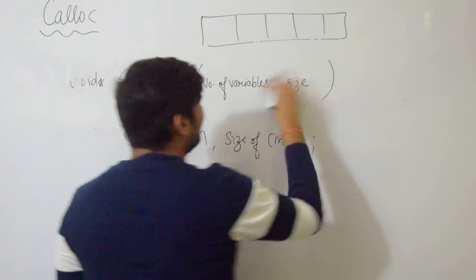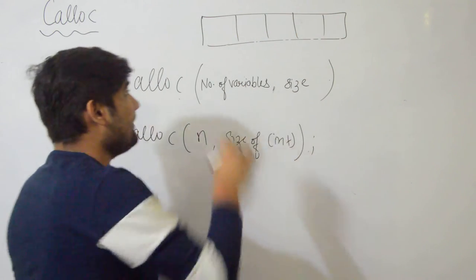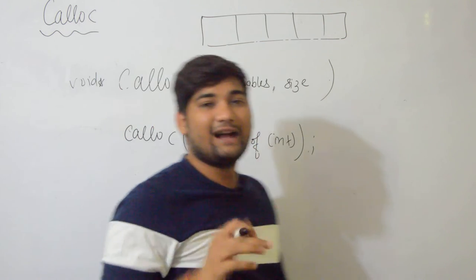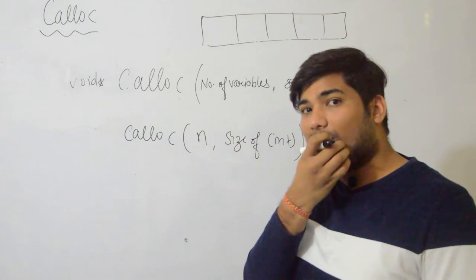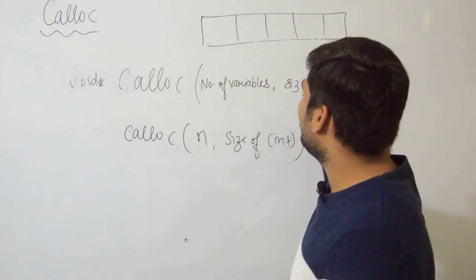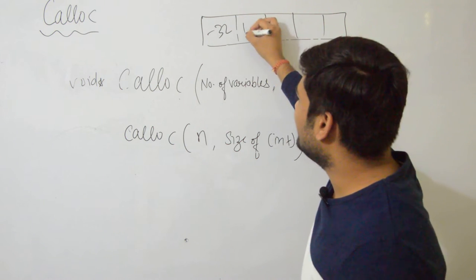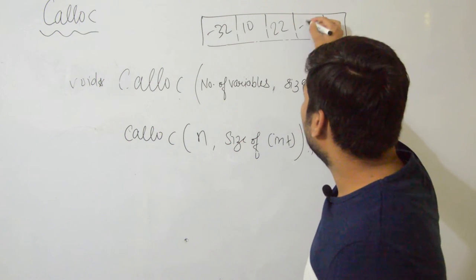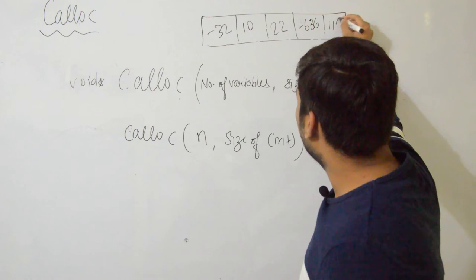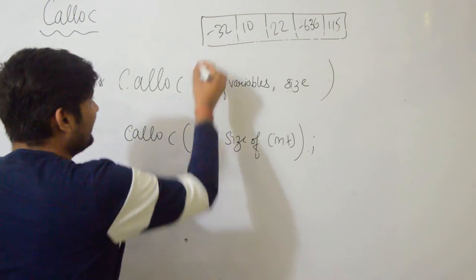When you request memory from malloc, let's say you asked for this memory from malloc, the memory malloc gives contains garbage - garbage values are initialized. Some random values like minus 32, 10, 22, minus 6, 36, 115.